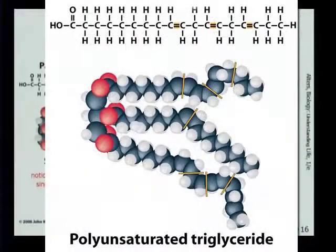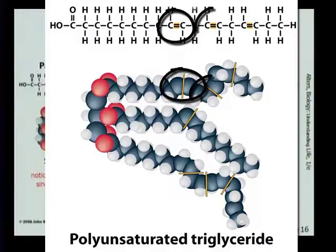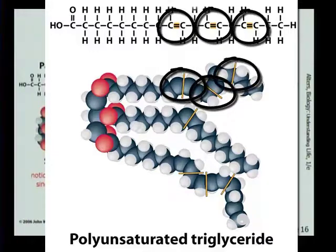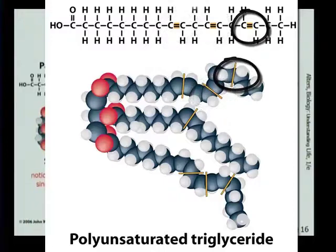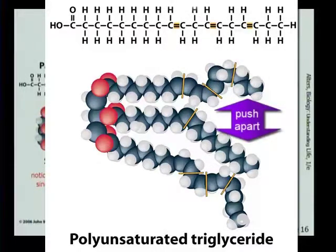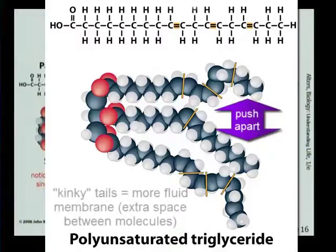An example of a polyunsaturated fatty acid is linoleic acid. When we add linoleic acid, with its three kinks formed by the three double bonds, we end up with the lipid tails of the triglyceride repelling each other, pushing each other apart. When we put these together into cell membranes, we're going to see that these kinky tails push each other apart and make the membrane more fluid.